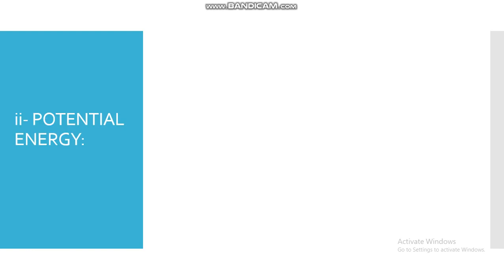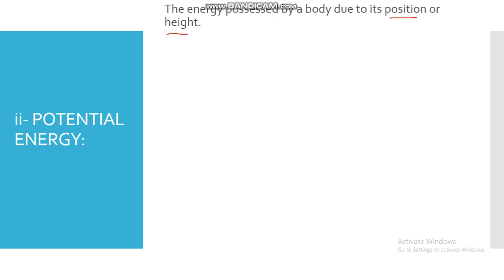The other type of energy is potential energy. The definition is: the energy possessed by a body due to its position or height. The energy a body possesses because of its position or height is called potential energy.